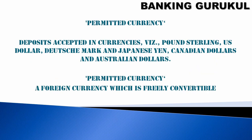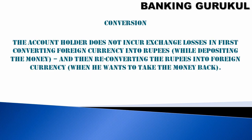What are the permitted currencies for FCNR deposits? FCNR deposits are accepted in these currencies only: Pound Sterling, US Dollar, Deutsche Mark, Japanese Yen, Canadian Dollar, and Australian Dollar. A foreign currency which is freely convertible is called a permitted currency. All FCNR deposits will be in these currencies only, unlike NRE and NRO accounts which are in Indian currency.